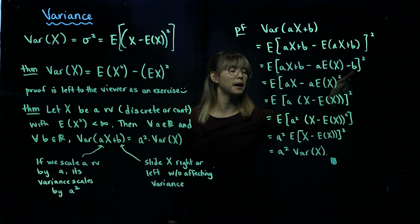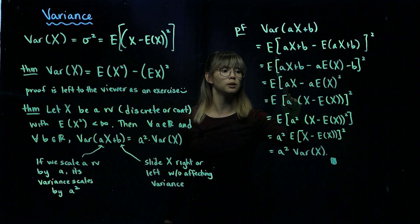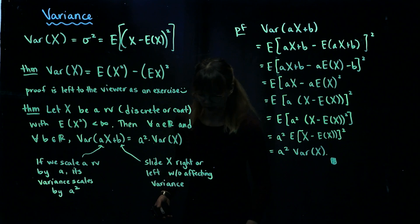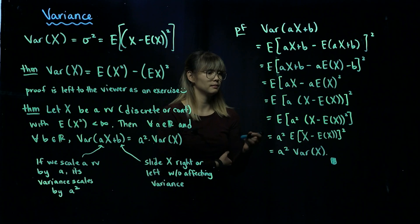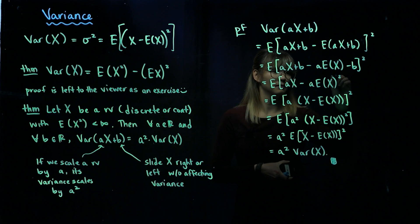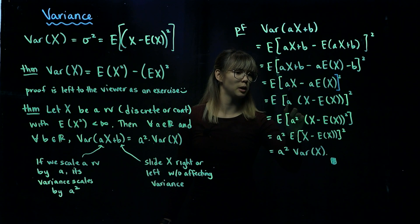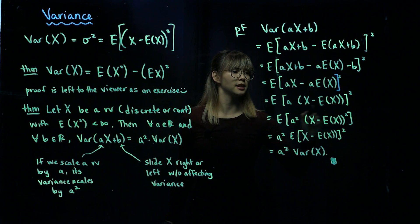We keep the first part aX plus b the same, and then we use linearity of expectation on the second piece, rewriting it as a times the expected value of X plus b. Carrying the negative through gives us negative a times the expected value of X minus b. The plus b and minus b cancel, leaving us with a times X minus a times the expected value of X, which we factor as a times the quantity X minus the expected value of X.